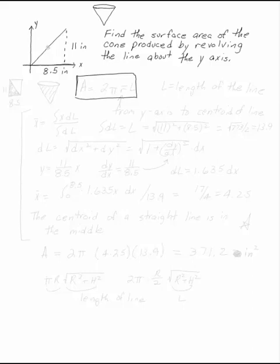Find the surface area of the cone produced by revolving the line about the y-axis. This is what you would get if you took an 8½ by 11 sheet of paper and folded it in half along its diagonal. Then you have the line that's 8½ by 11.